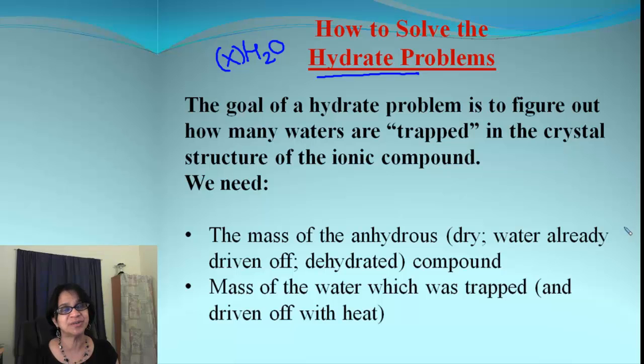Now there are two things we should remember. We will have two masses. We will have the mass of the anhydrous when it is dry there is no water and we will have the mass of water which is trapped. And if it is together if we add these two what we call is the hydrate. So that will be mass of the hydrate molecule.